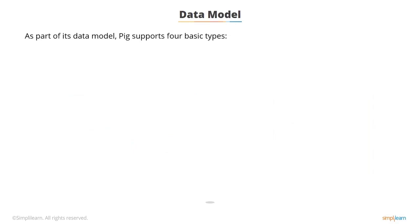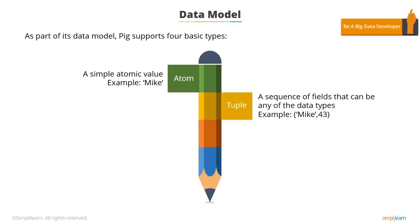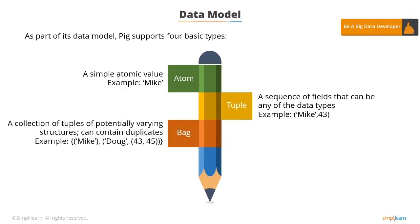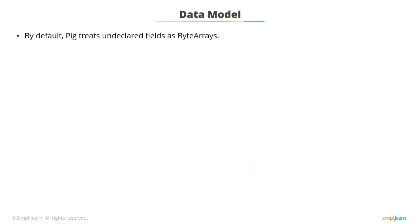As part of its data model, PIG supports four basic types. The first is atom, which is a simple atomic value like integer, long, double, or string. The second is tuple, which is a sequence of fields that can be of any data type. The third is bag, which is a collection of tuples of potentially varying structures and can contain duplicates. Finally, there is map, which is an associative array. The key must be a character array, but the value can be of any type. By default, PIG treats undeclared fields as byte arrays, which are collections of uninterpreted bytes.